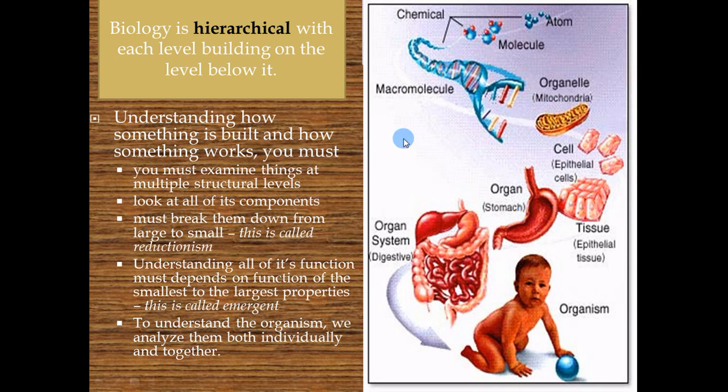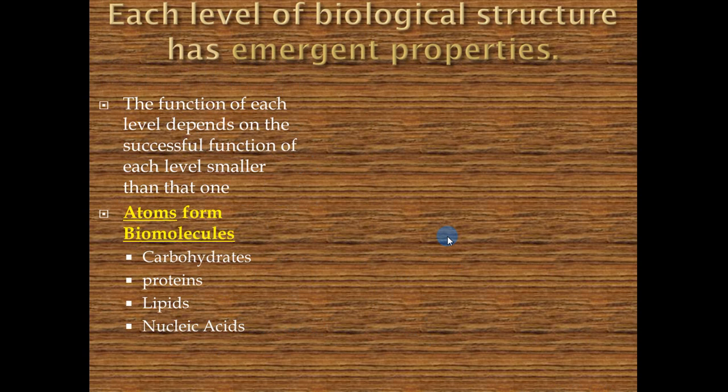We'll see how the different organ systems — like the digestive tract with the cardiovascular and nervous system — form an organism, and we'll see that all these things are dependent on each other. You can't have just one organ system and have complete, sustainable life. Just imagine what would happen if you had no digestive tract, or no brain. Your heart can beat on its own, but as soon as the brain stops telling the lungs to pump oxygen, your heart will fail.